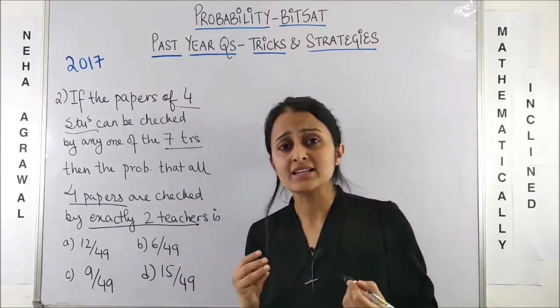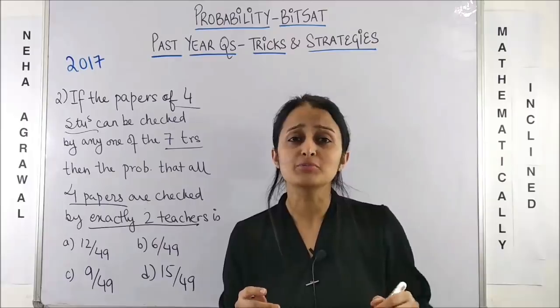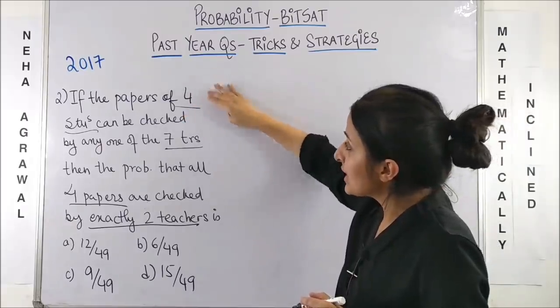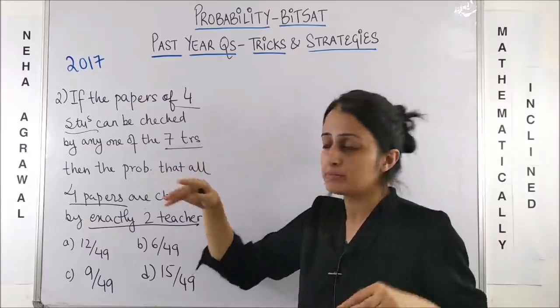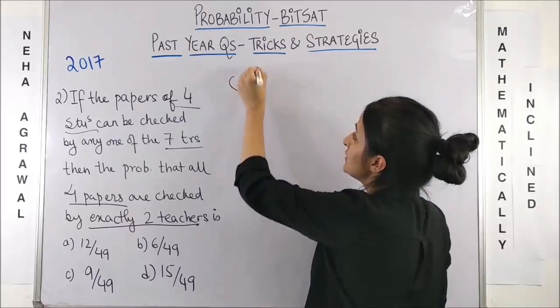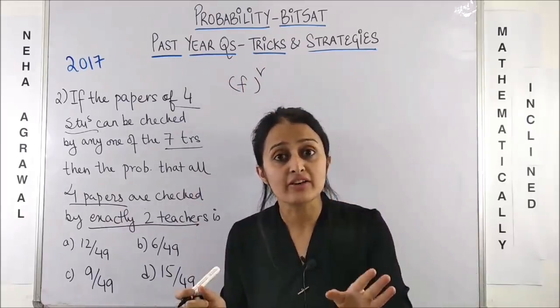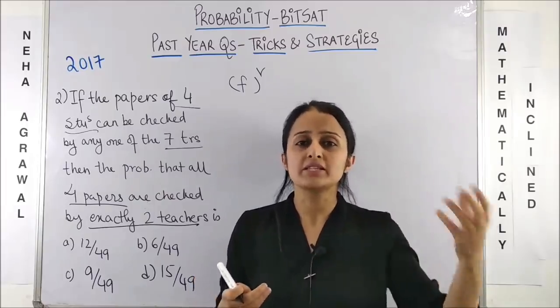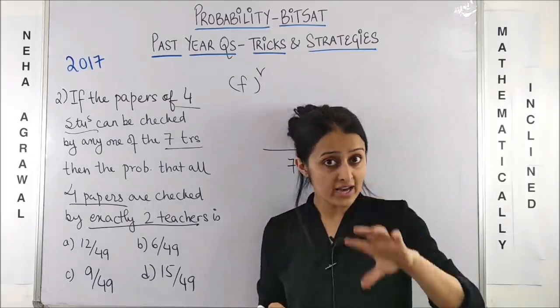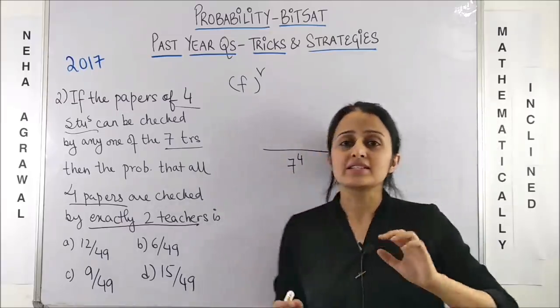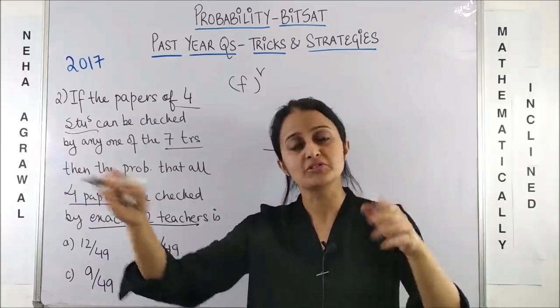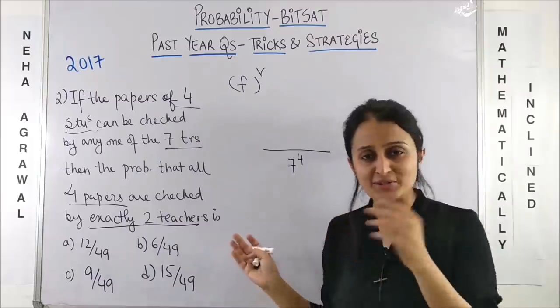Now, I had discussed this short trick. Once again, you can refer to my videos in probability tricks where we know if we have to look at this situation where papers of 4 different students can be checked by 7 different teachers. In this case, the trick that we used is always fixed raised to power variable. What is fixed? The teachers are fixed. And what is variable? The papers are variable. Basically, any paper can go anywhere. So, total would become 7 raised to power 4.